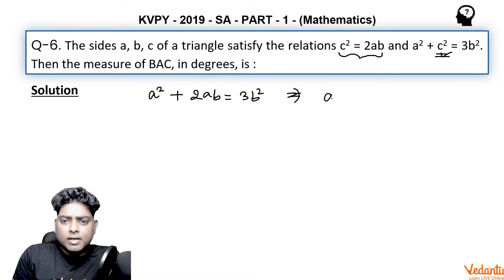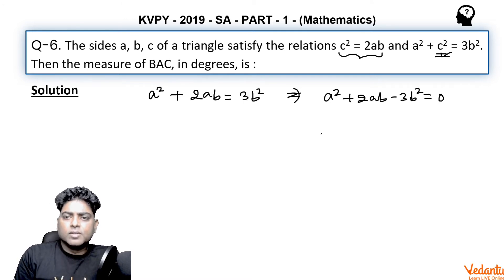If you take the terms on the left, I will get a² plus 2ab minus 3b² equal to 0. So here if we go for making factors, it is very easy to make factors here.